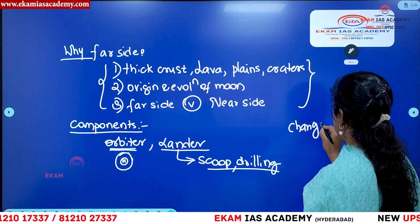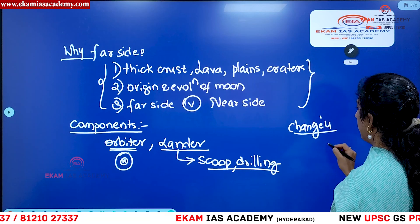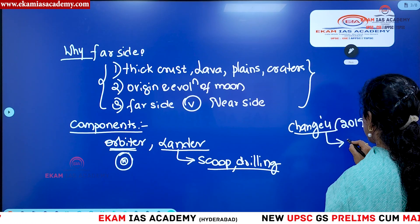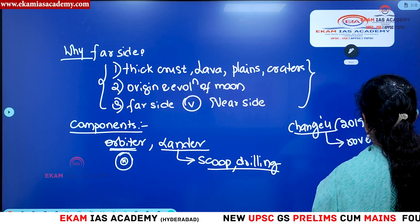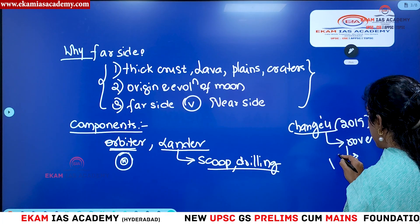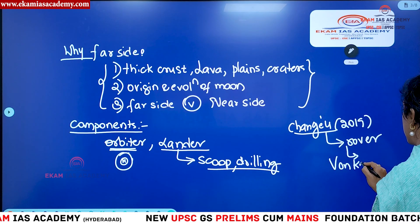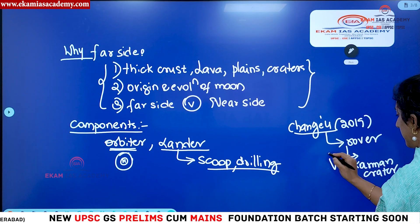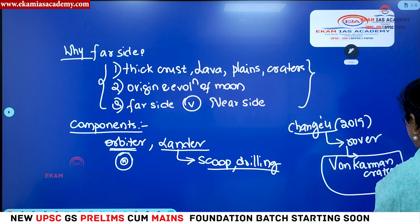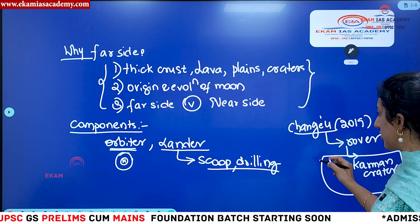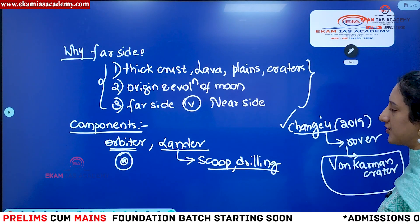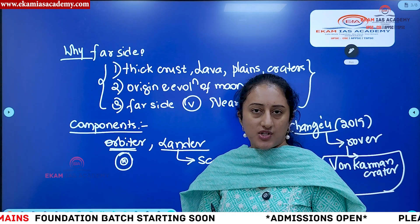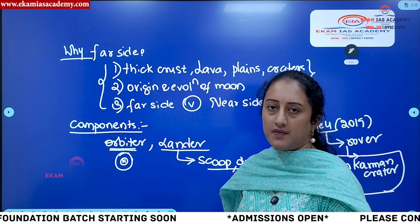There is also the earlier Chang'e 4 mission to compare. Chang'e 4 was launched by China in 2019, where it sent a rover to a crater called Von Kármán crater on the lunar surface to work on and study that particular crater.